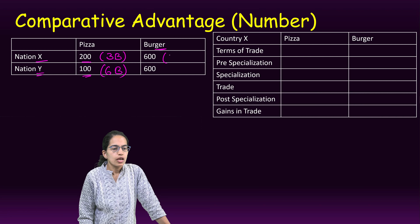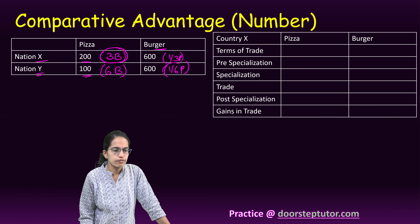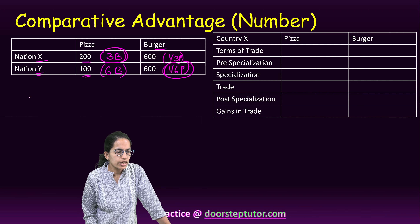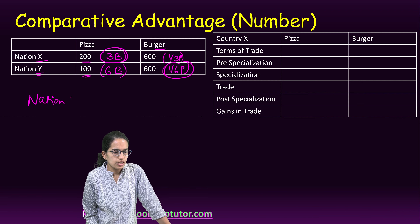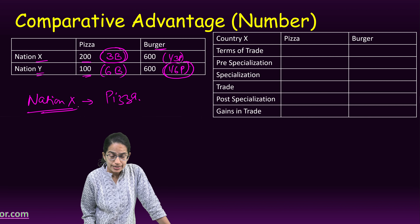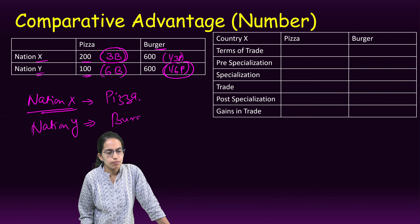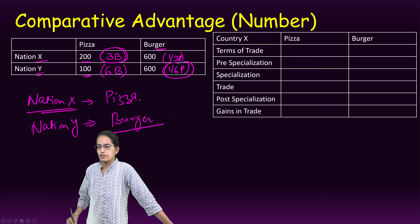First we want to find out the comparative advantage by calculating the opportunity cost. In the first case it would be 600 divided by 200, that means 3 burgers for 1 pizza. In the second case it would be 600 divided by 100, which is 6 burgers for 1 pizza. Conversely, that gives 1/3 and 1/6 pizzas respectively. So which value is smaller here?